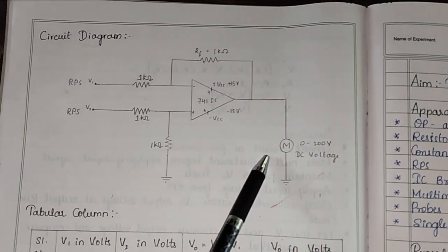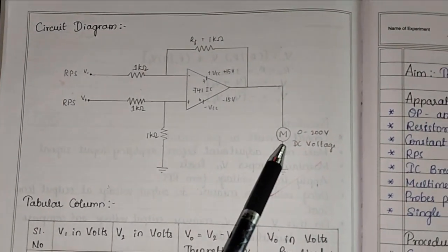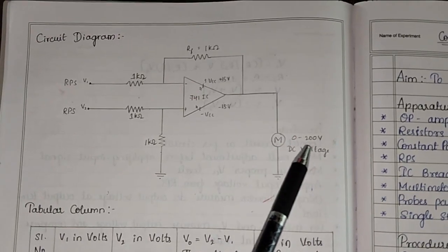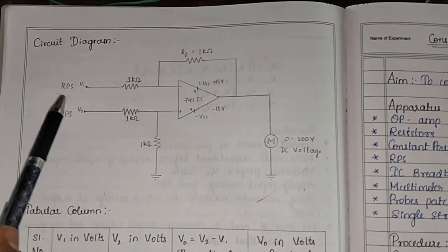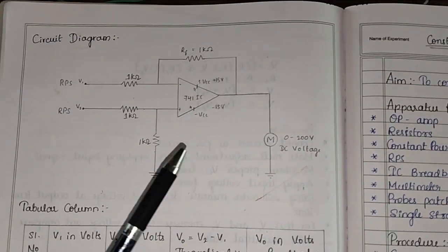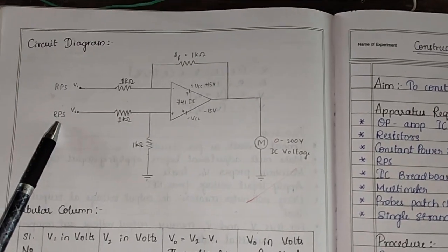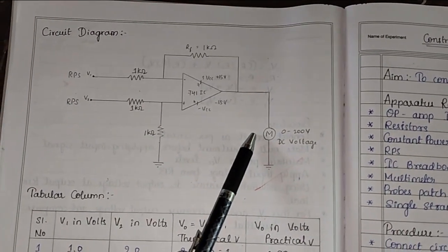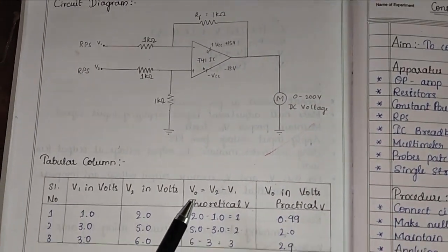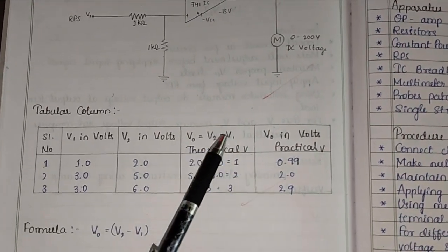We observe the output in multimeter in the DC voltage range from 0 to 200. When we apply V1 and V2 here we get V0. The V0 value is given as V2 minus V1.